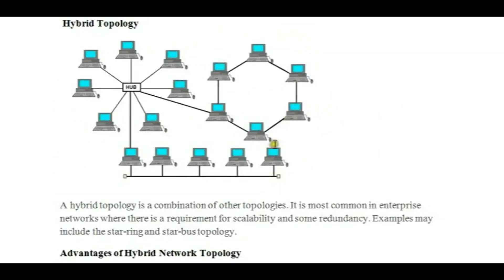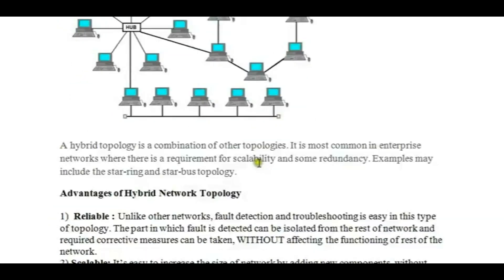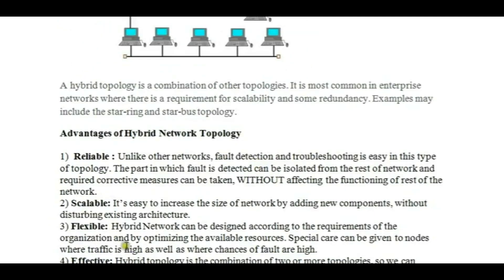Hybrid topology is flexible because its design is suited for an organization level in an optimized way, allowing it to handle traffic while data is transferred. Since it is a combination of star, ring, and bus, there may be traffic or collision, but flexibility allows optimization and adjustments according to the organization's needs.